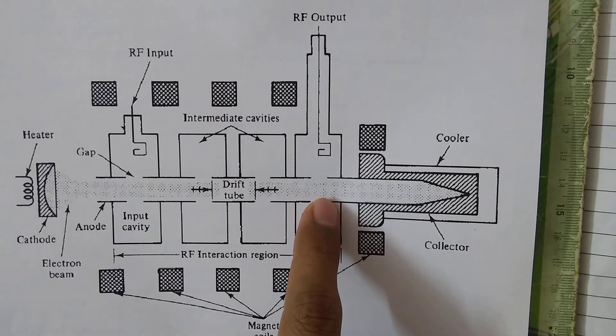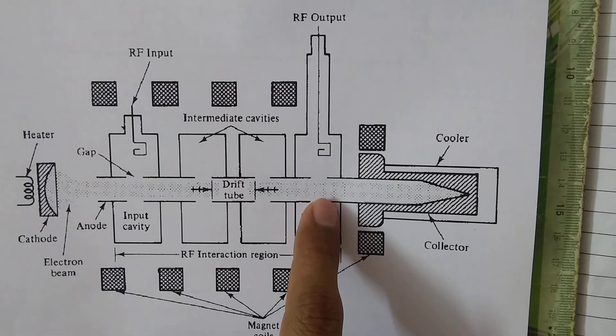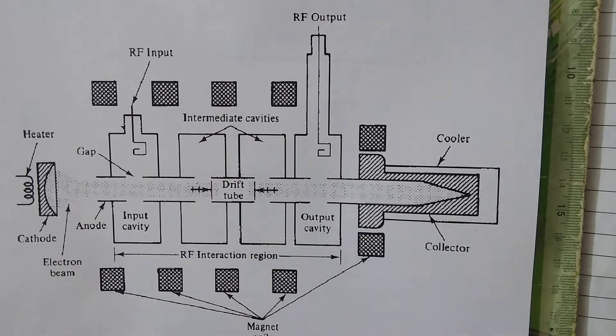There are various applications for multi-cavity klystron amplifiers. They may be used in TV transmitters as output tubes or in satellite earth stations as power amplifiers inside the transmitters.